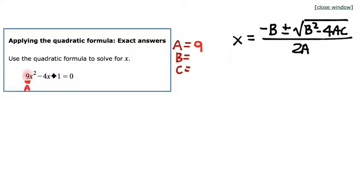Likewise for B, B is the coefficient attached to the first power of X. That makes B, regardless of where it appears, negative 4. And then C is the constant coefficient. Regardless of where it appears in the order, C is going to be 1.